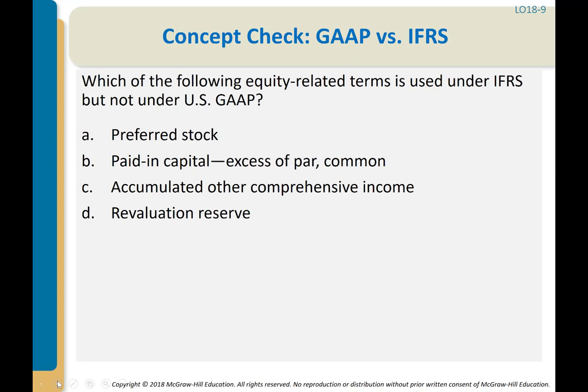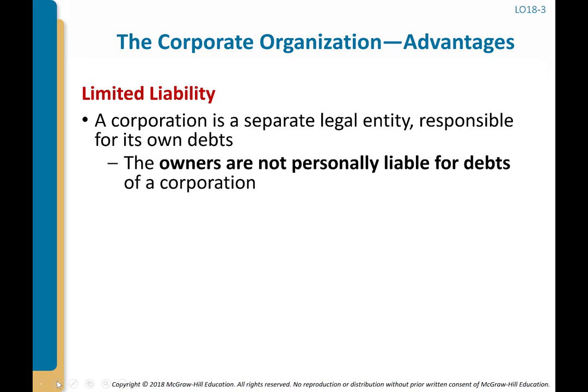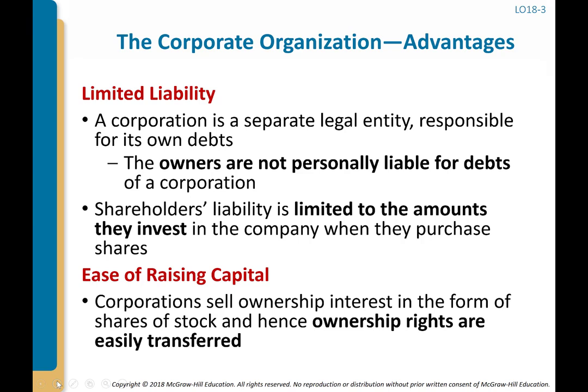The correct answer is C. Next question: which equity-related term is used under IFRS but not US GAAP? That would be revaluation surplus — the R in PUFFER, which is IFRS only. Now let's talk about corporate structure, since we're talking about issuing stock. We are likely talking about corporations, and one of the key reasons you'll incorporate when you start your own business is to have limited liability.